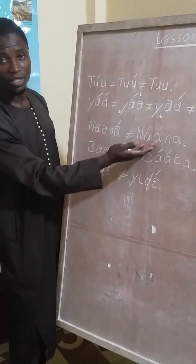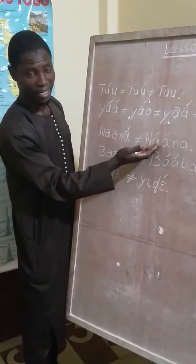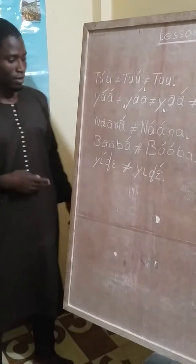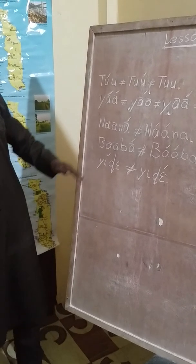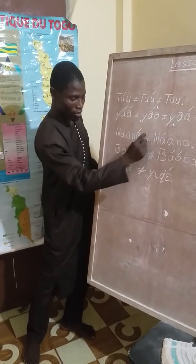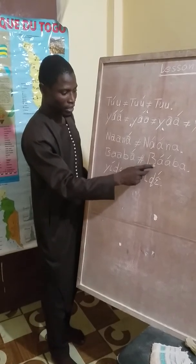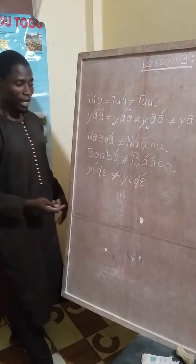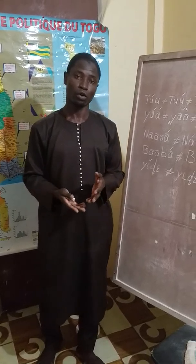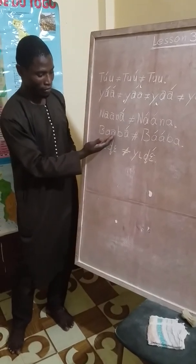So if you write it this way, it's wrong. This is 'na, na', meaning 'mother'. Here it is 'ba, ba' — this is high-high tone. Whereas this is 'ba-ba', which is 'buru', the word from English.